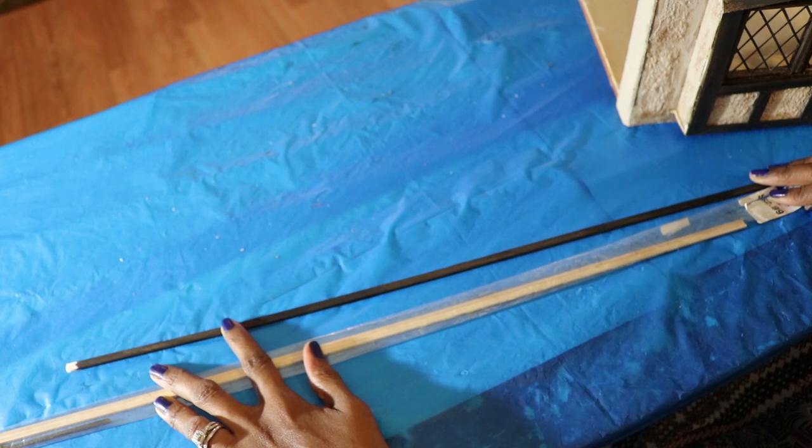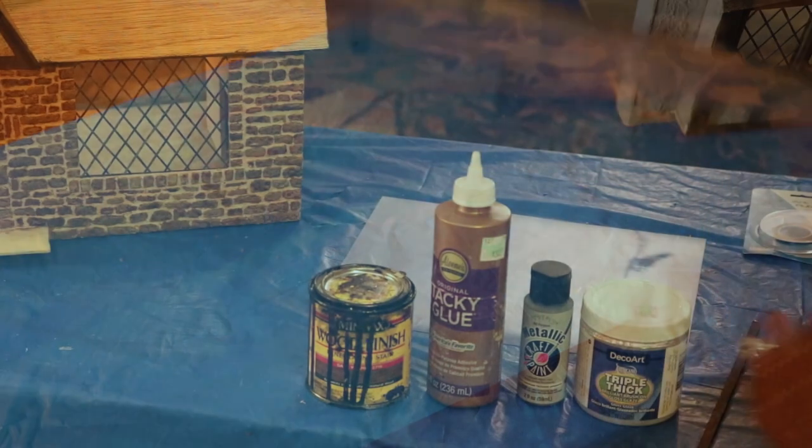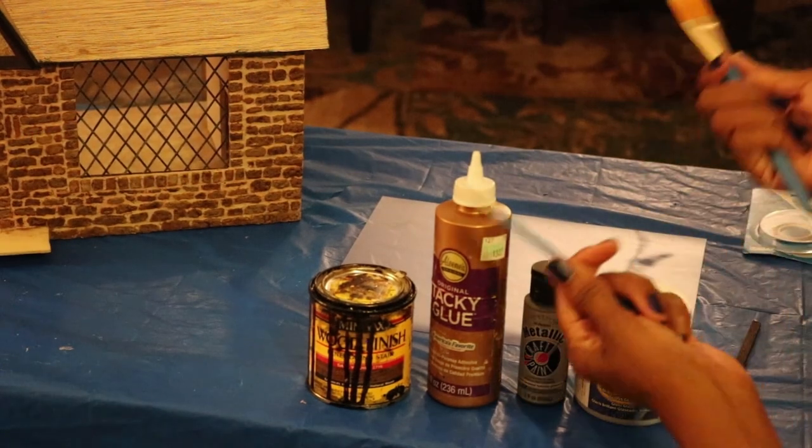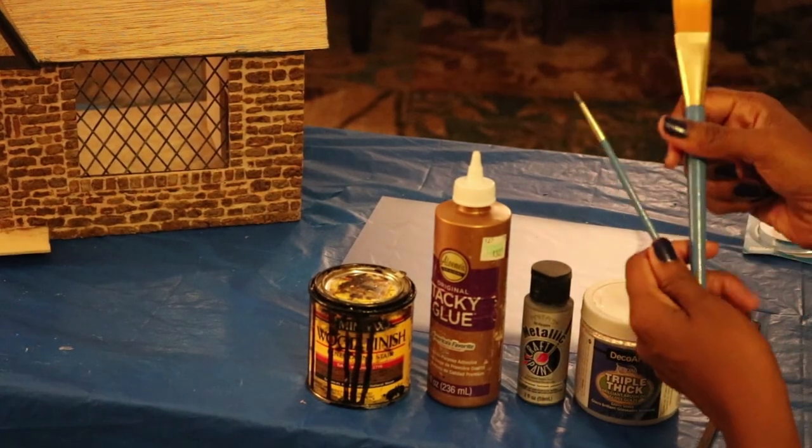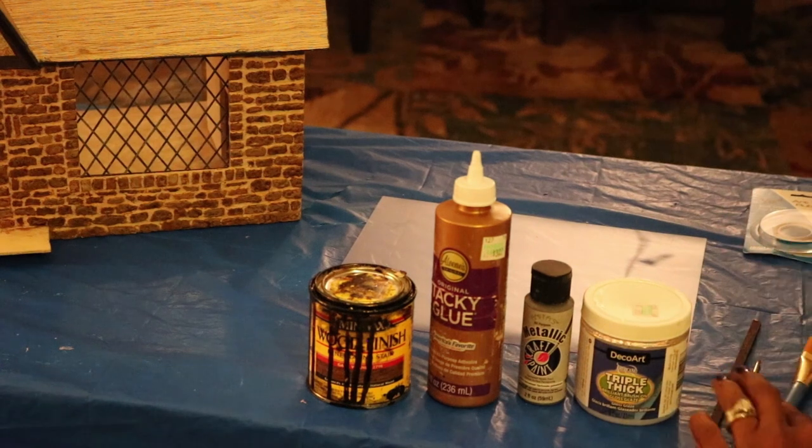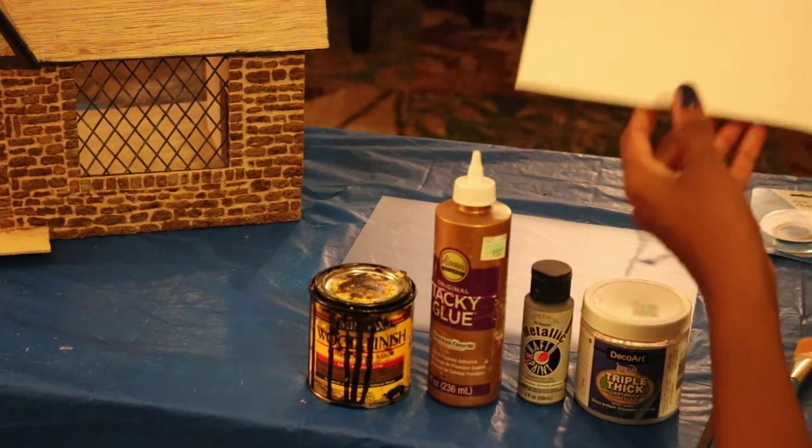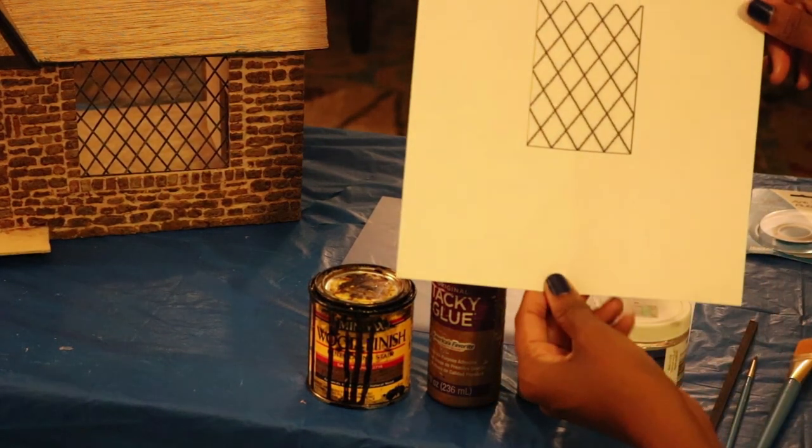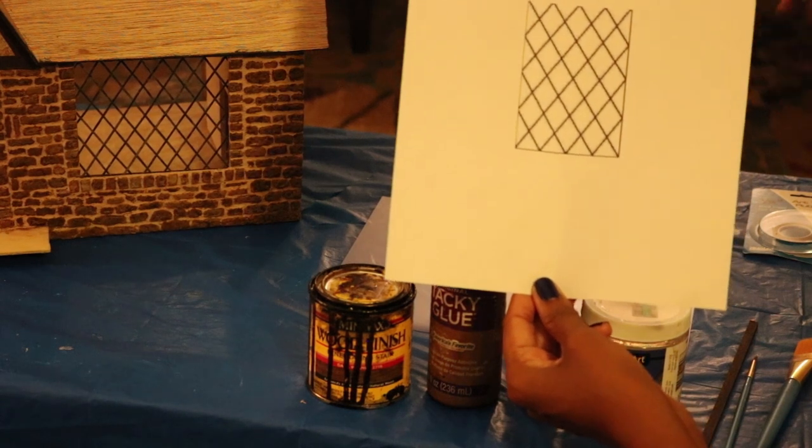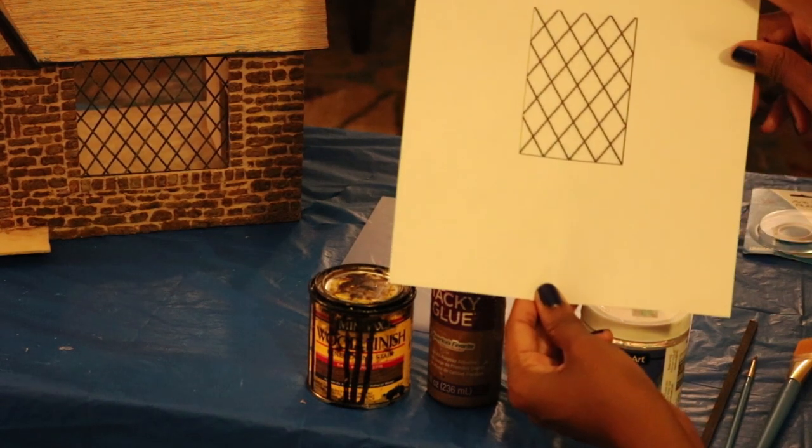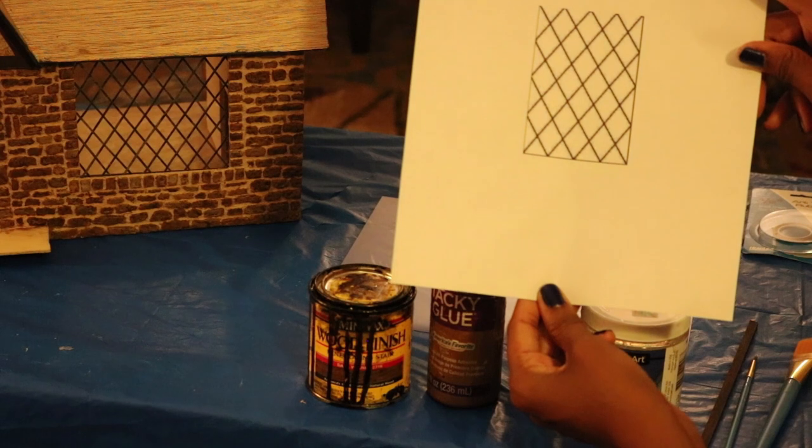I've already started staining the wood because it's easier to stain it before cutting it. Other things you'll need are two paint brushes, a fine one and a broad one. And you'll need to print out an image of a diamond paned window. To find this one, I just searched online for images of leaded glass windows and then resized it to fit.